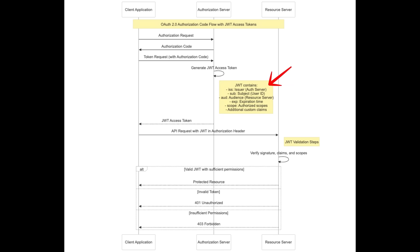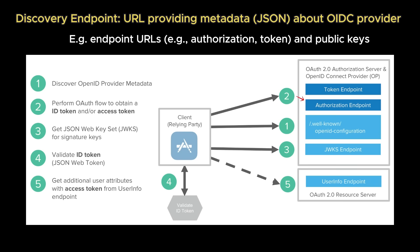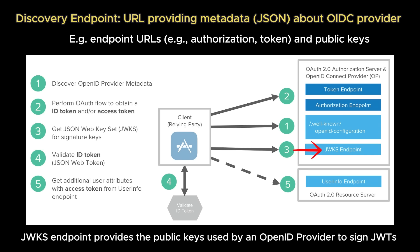In OpenID Connect, there's a discovery endpoint, usually at /.well-known/openid-configuration. It's a metadata URL that lets clients automatically find all the important endpoints and configuration details of an identity provider — like the authorization, token, user info, and JWKS endpoints — without hard coding them. It's how clients discover how to connect and authenticate with an OIDC provider dynamically.